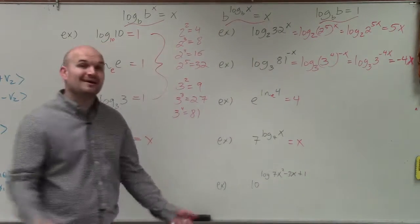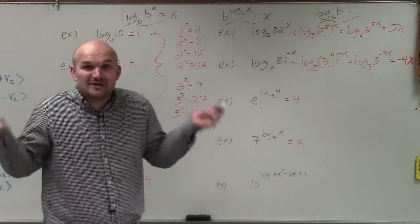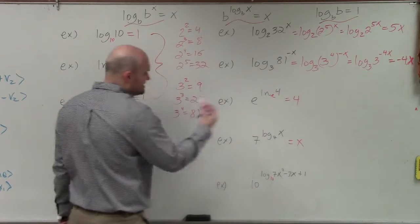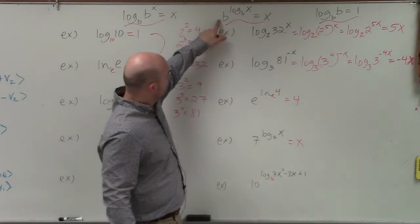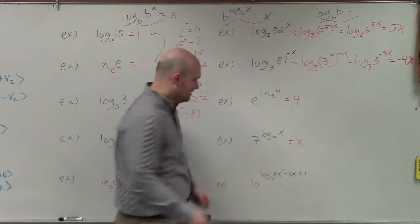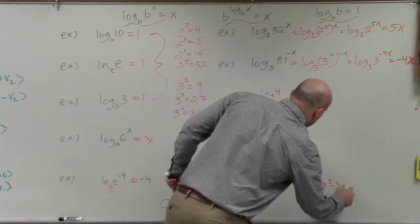And the last example, I want to have a little fun, because I know usually people will look at this and be like, oh god, look at that. Crazy. I don't know how to do this. But again, if you just follow the rules, 10 raised to the log base 10, just equals whatever you're evaluating for. So therefore, my answer is just 7x squared minus 3x plus 1.